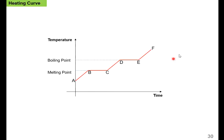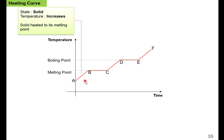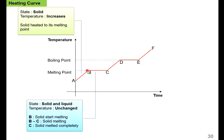Let's look at this heating curve — it's called a heating curve because the temperature increases. This is a temperature versus time graph. At point A, from A to B the substance remains in the state of solid and the temperature increases. The solid is heated to its melting point. At point B the solid will start to melt. From B to C it exists in a solid-liquid state whereby the temperature remains unchanged, and at point C all the solid has already melted completely.